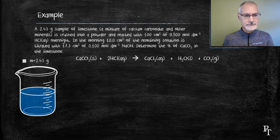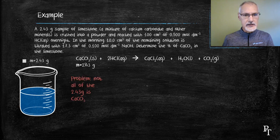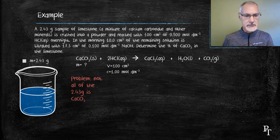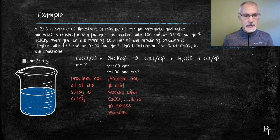Let's look at some of the issues with this. First off, that mass of 2.43 grams — placing it under calcium carbonate wouldn't be correct. The problem is that 2.43 grams is a mixture of calcium carbonate and other minerals, so we really don't know what the mass of calcium carbonate is; simply that it's less than 2.43 grams. Another issue is with the volume and concentration of hydrochloric acid — that was the amount added, but not all of the acid reacted. Some was left over to react with sodium hydroxide. The problem with using the hydrochloric acid information is that it's the excess reagent — we need the limiting reagent.